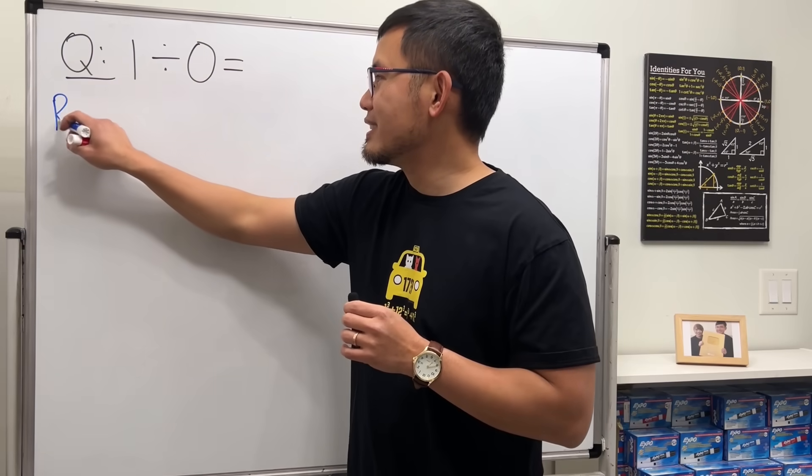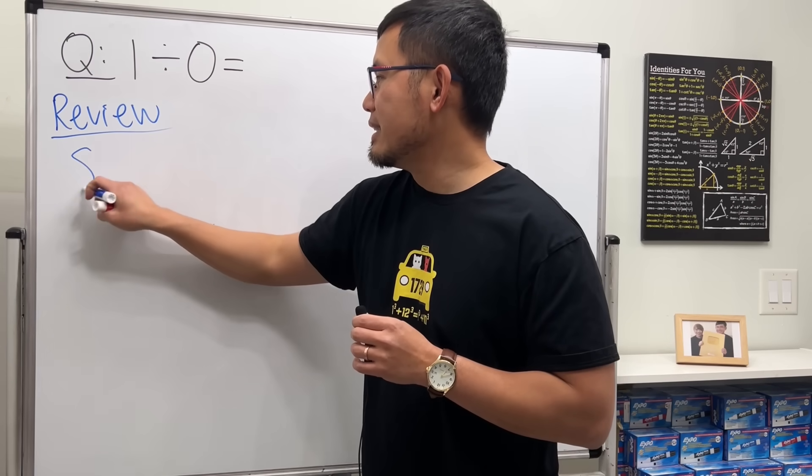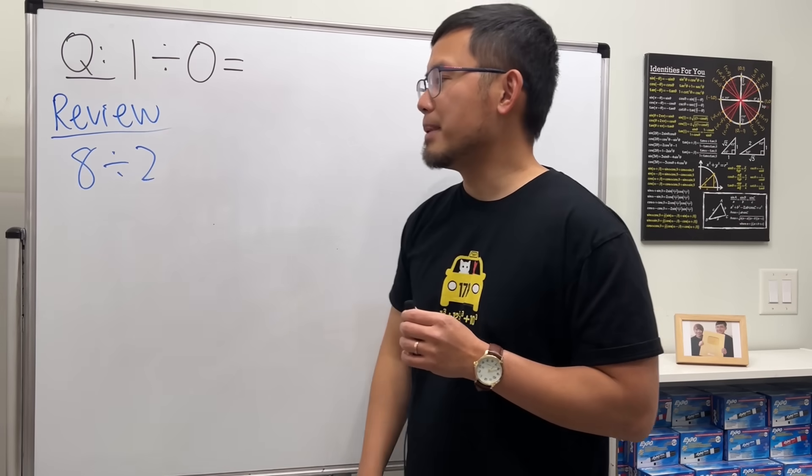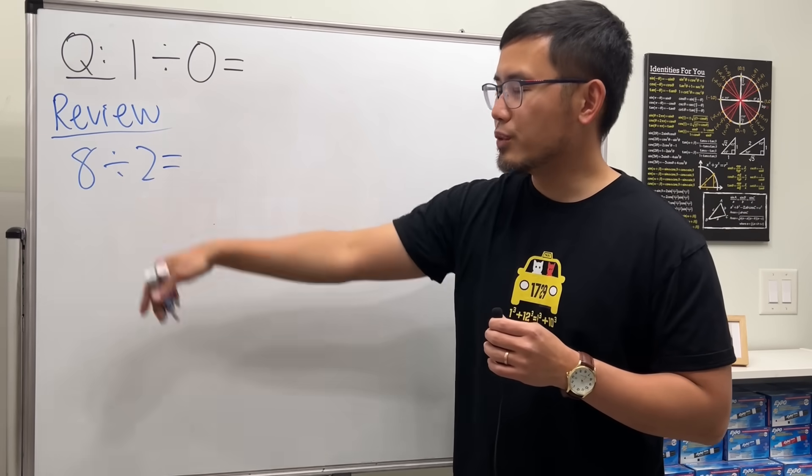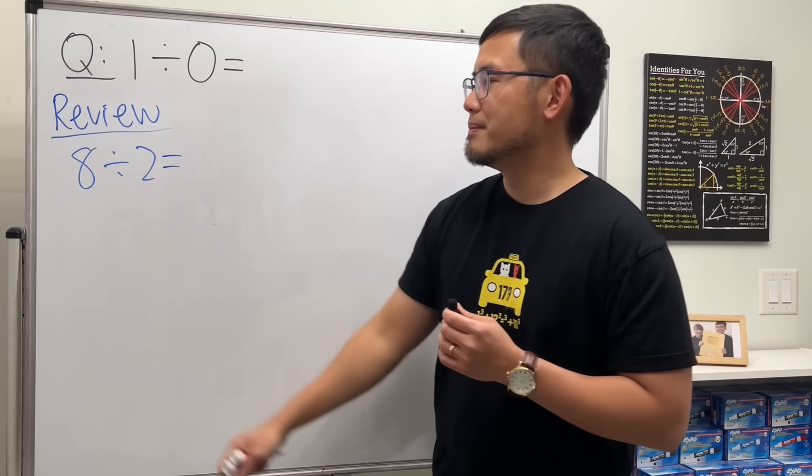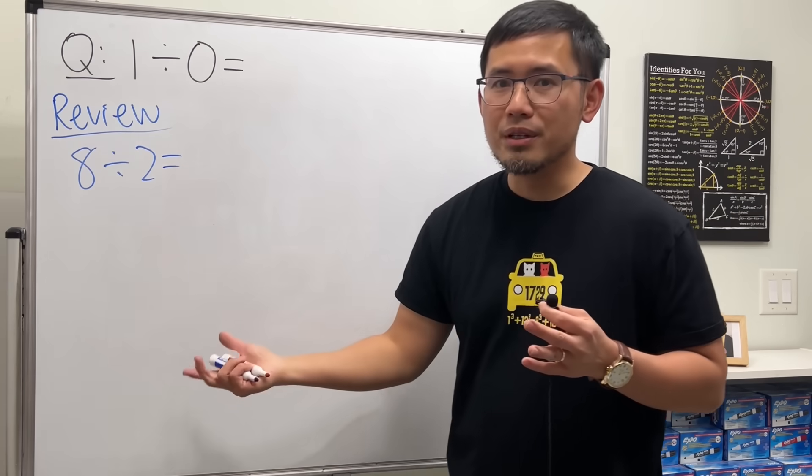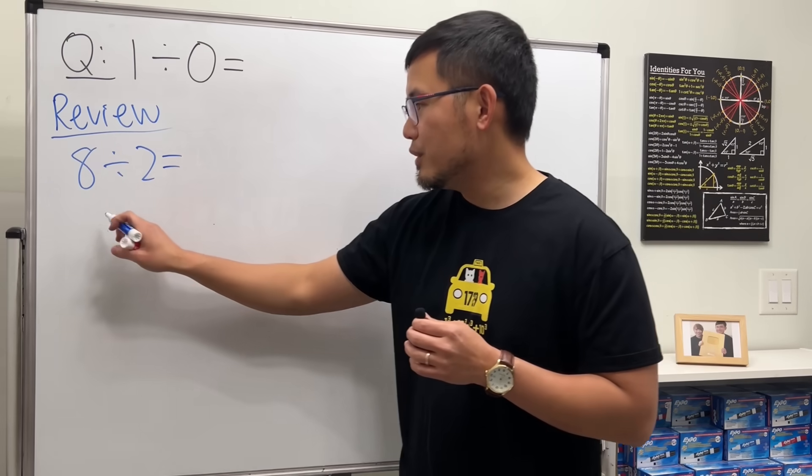Let's review division first. So let's say we are going to divide this right here, like 8 divided by 2. I know the answer is 4 because 2 times 4 is equal to 8, but how do we work it out if this number is bigger? Well, we can do long division, my favorite.